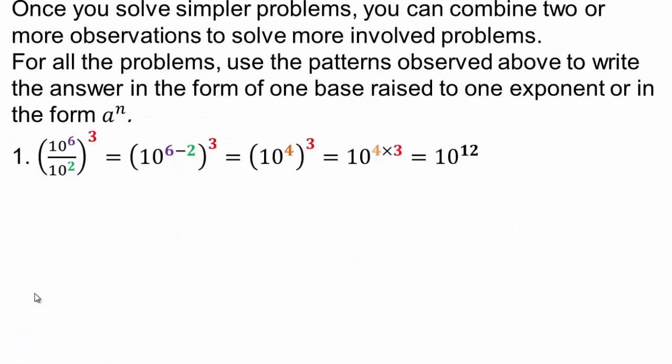Now that you've solved simpler problems, let's combine what we had in the previous lecture with this one. We already know that 10 to the 6 over 10 to the 2 — we can subtract exponents and get 10 to the 4. Now we have 10 to the 4 to the 3rd power. We already know how to do that: 10 to the 4, three times, gives us 10 to the 12.